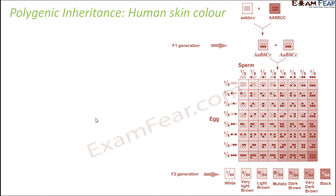Let us take the example of human skin color and see how it is a pattern of polygenic inheritance. First, let's understand why we have different skin colors. The skin color of human beings is determined by the quantity of a pigment called melanin. If you have more melanin, your skin will be darker. If you have less melanin, your skin will be lighter.